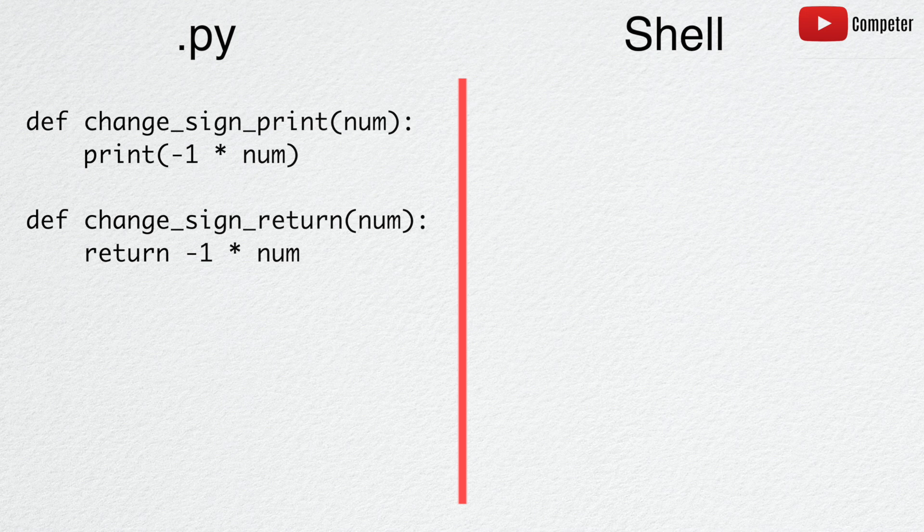Let's take a look at an example. Here, we define two similar functions. change_sign_print takes a number, num, as an argument, and prints negative 1 multiplied by num.